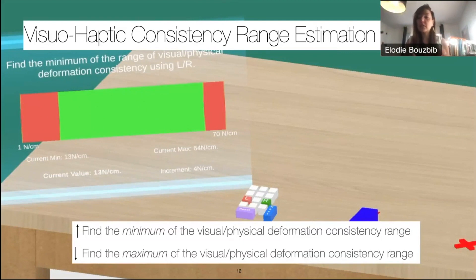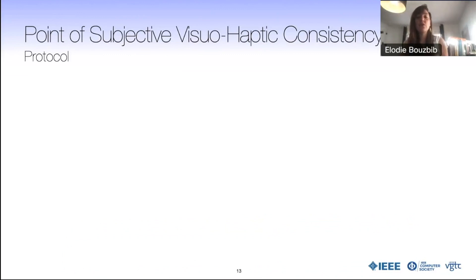They were changing the stiffnesses by themselves to find out the appropriate range for which the illusion was efficient. We then used these results to refine the stiffnesses to test and find out the point of subjective visual haptic consistency in a user experiment where people thought that the objects were being changed between the trials.